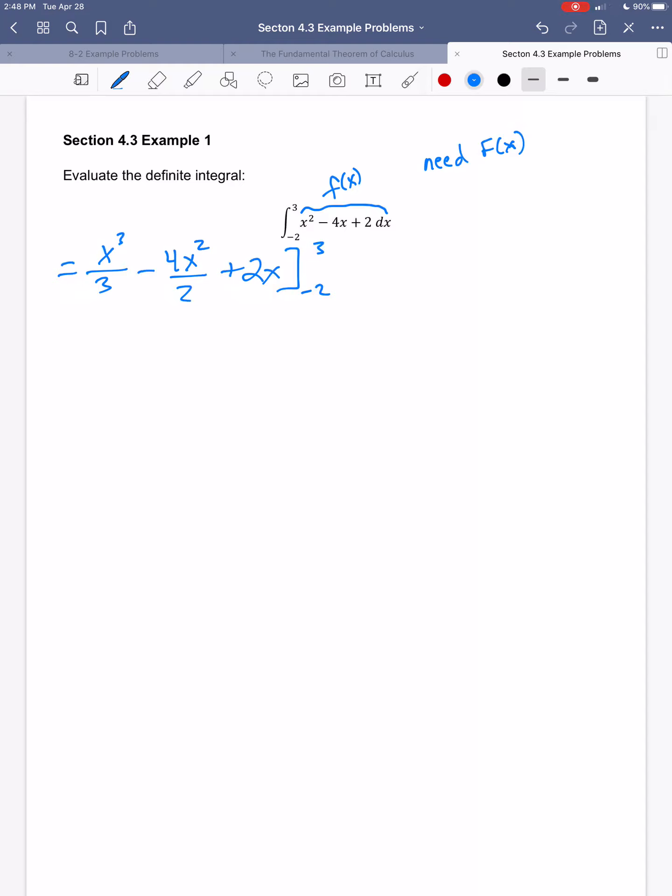So that's what this notation means. So now I'm going to take this value of 3, plug it in for all the x's, and then this value of negative 2, plug that in for all the x's, and then subtract those results.